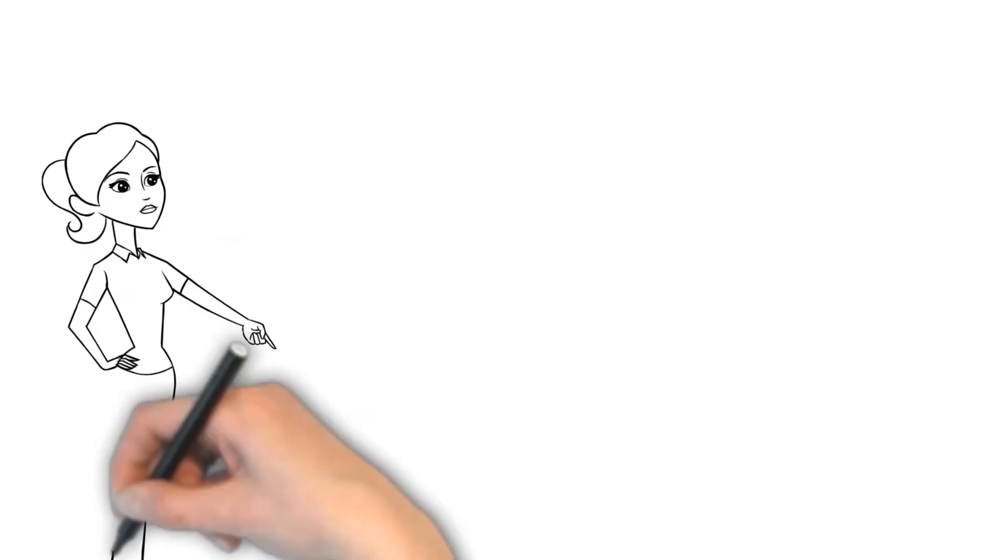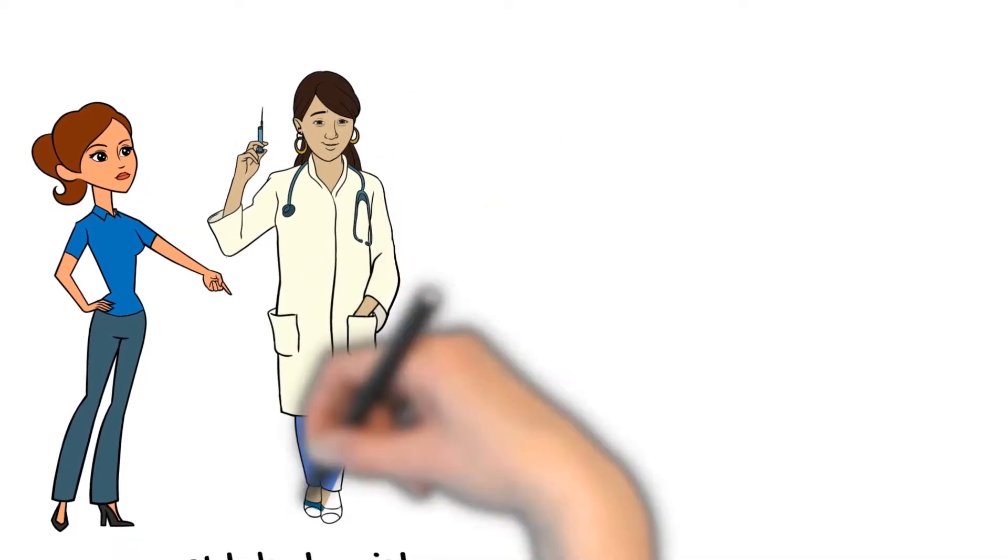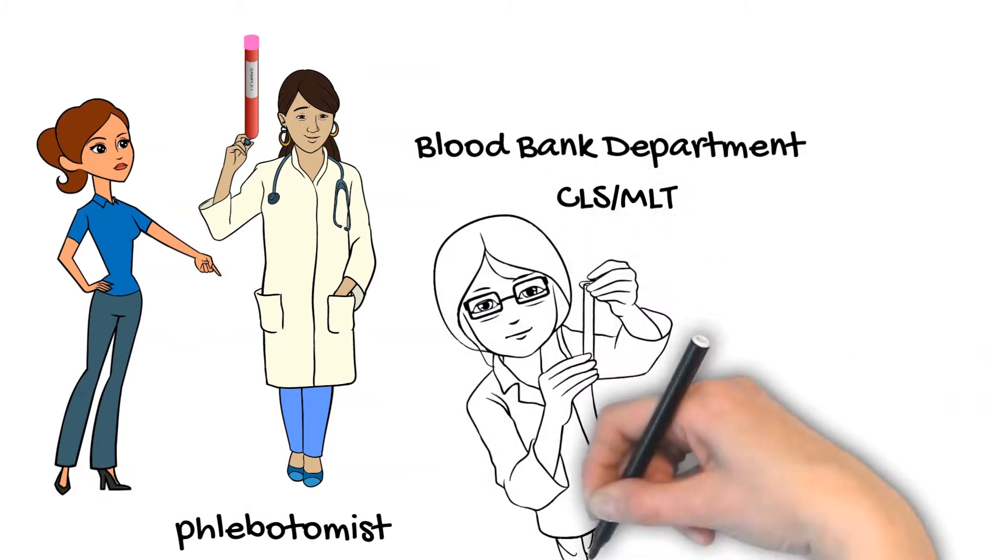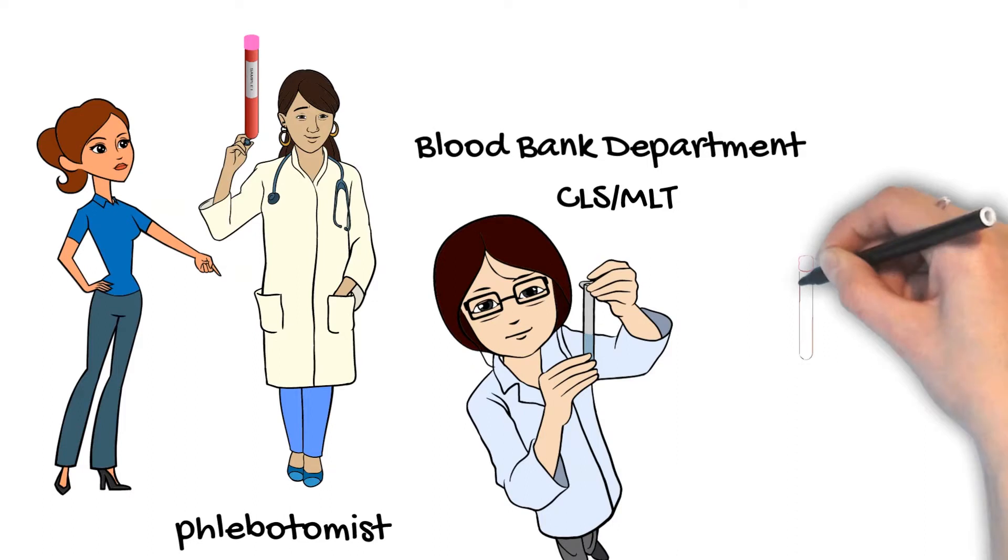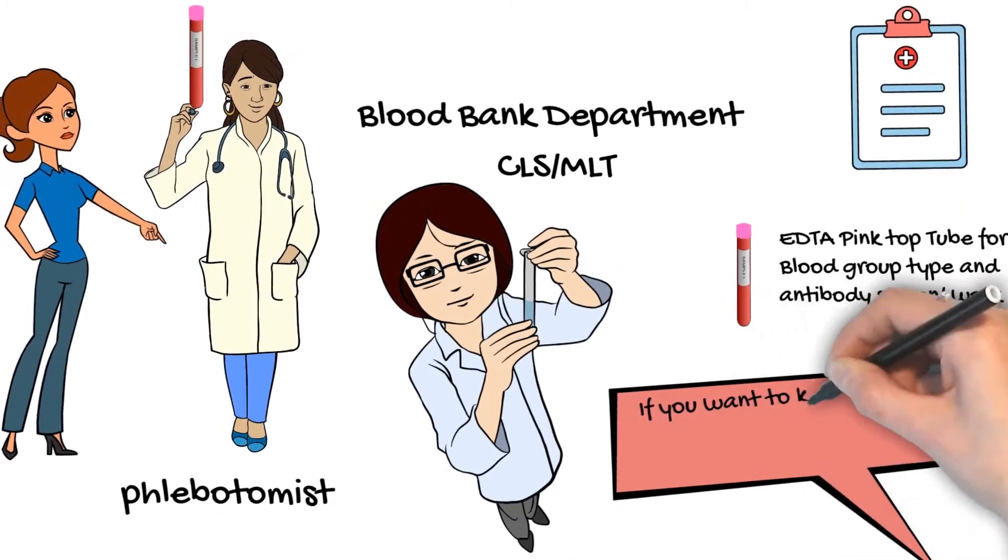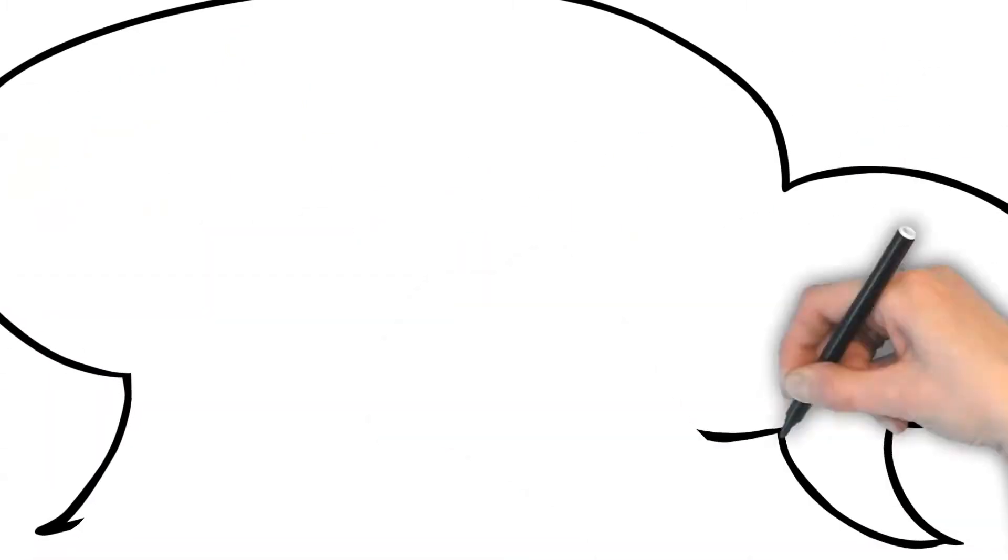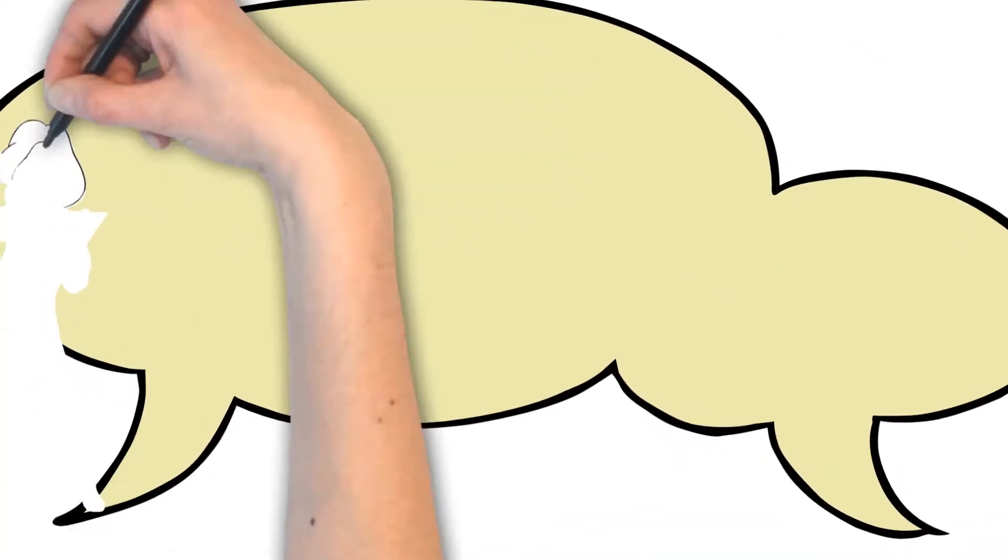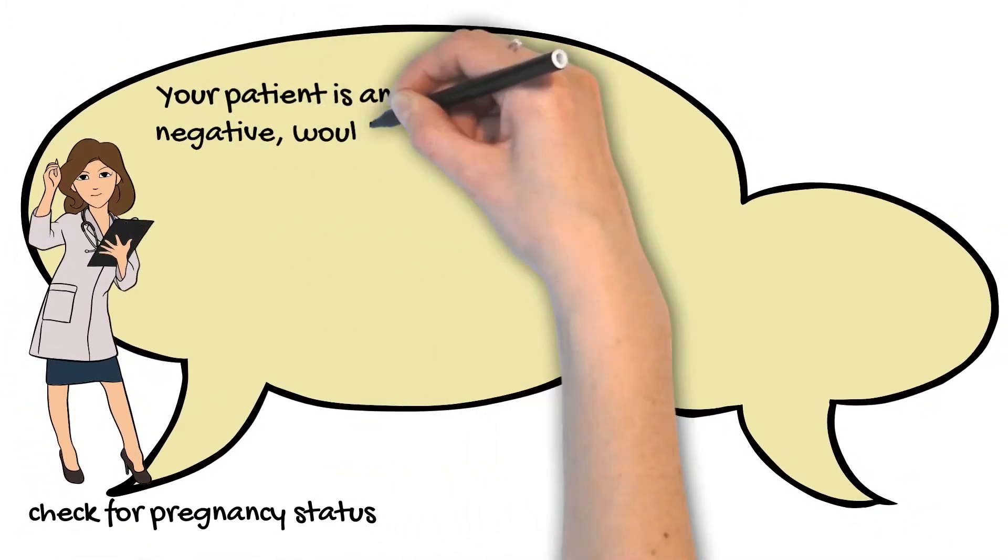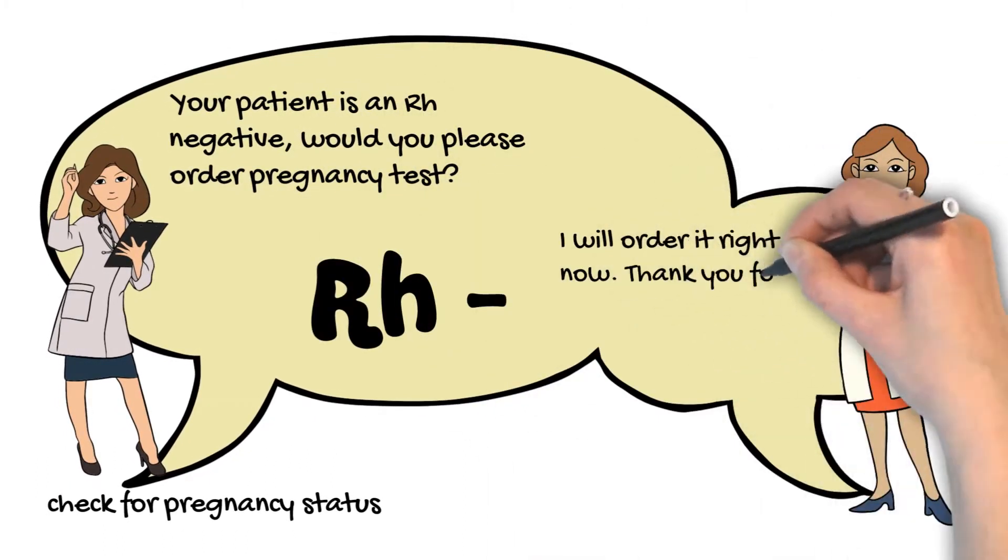The first step to determine if a patient is RH negative or not is that the phlebotomist draws your blood and sends the sample to laboratory. Then the clinical laboratory scientists or CLS perform blood tests. CLS perform tests on all kinds of bodily fluids and send the test results to doctors who gather all the information and proceed with necessary treatments. If it is determined that the patient is RH negative, CLS will check the pregnancy status and determine whether the patient needs the RHIG or not.